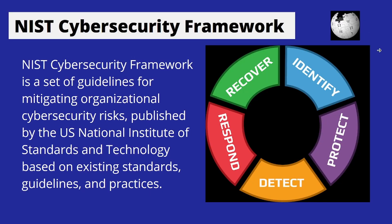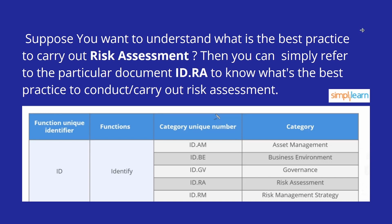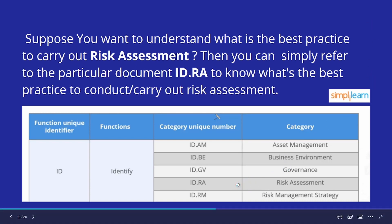The NIST Cybersecurity Framework is a set of guidelines for mitigating or preventing organizational security risk, published by the United States National Institute of Standards and Technology based on existing standards, guidelines, and practices. It has five functions. The first is Identify — for example, to understand best practices for asset management, refer to document ID.AM, where 'ID' is the identify function identifier and 'AM' stands for asset management. For risk assessment best practices, refer to ID.RA. In the second function, Protect, to learn about awareness training, refer to document PR.AT.